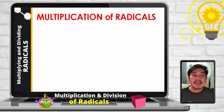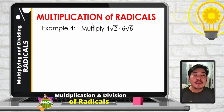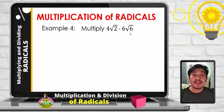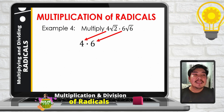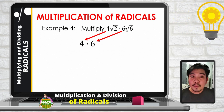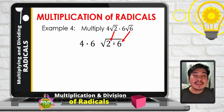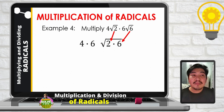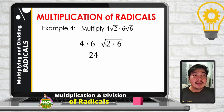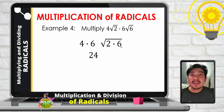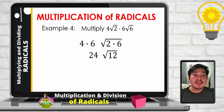Example number 4. Multiply 4 square root of 2 times 6 square root of 6. Same process — multiply all the coefficients 4 and 6. Since they have the same index 2, we can combine them into one radical symbol. 4 times 6 is 24. Then inside the square root, 2 times 6 gives us 12.